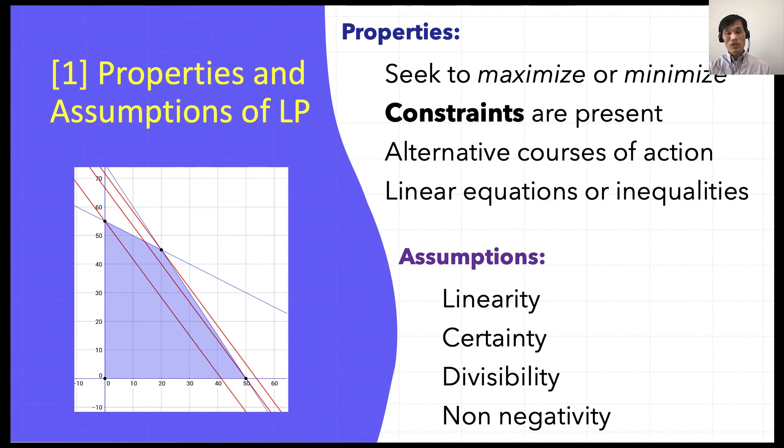And certainty means the numbers in the objective and constraints are known with certainty and do not change during the period being studied. For example, there is no uncertainty of increasing our resources from, say, 100 people to 1000 people. But in reality, it's actually quite difficult to increase the number of people that we hire. But in this linear programming, we assume that everything is certain and it's going to happen mathematically.